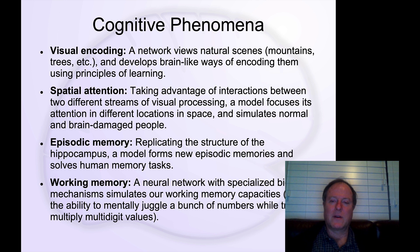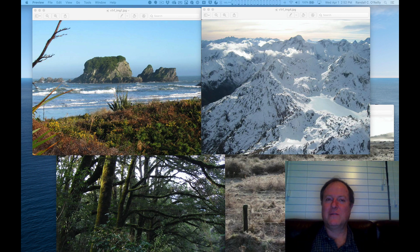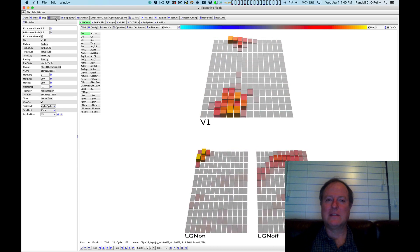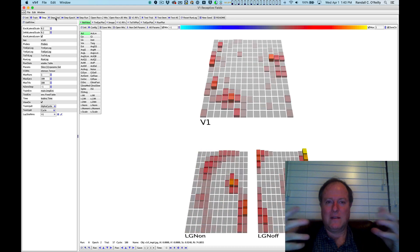We have a network that looks at visual scenes. It looks at pictures from our trip to New Zealand. And it actually extracts the statistics of those pictures and efficiently encodes the information present in those visual scenes.